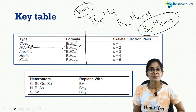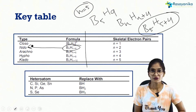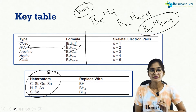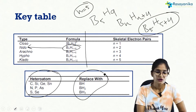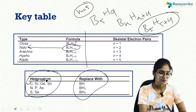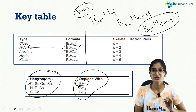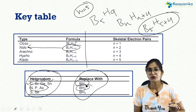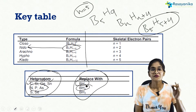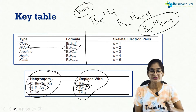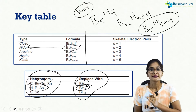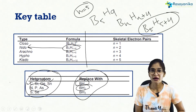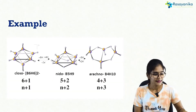In the case of heteroboranes, there will be hetero atoms. For each hetero atom, you consider it equivalent to a certain number of BH units. Carbon, silicon, germanium, and tin are each equal to one BH unit. Nitrogen, phosphorus, and arsenic are each equal to one BH₂ unit. Using these equivalences, you calculate the cluster type.